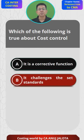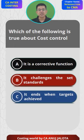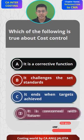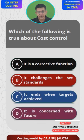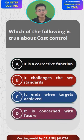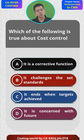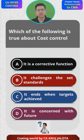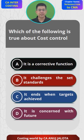So what are the four options? A: it is a corrective function. B: it challenges the set standards. C: it ends when targets are achieved. D: it is concerned with the future. Think about it and try to comment the correct answer.